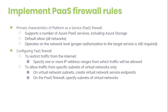By default, storage accounts accept connections from clients on any network. To limit access to selected networks, you must first change the default setting. Making changes to network rules can impact your application's ability to connect to Azure Storage. Setting the default network rules to deny blocks all access to the data unless specific network rules that grant access are also applied. Be sure to grant access to any allowed networks using network rules before you change the default to deny access.